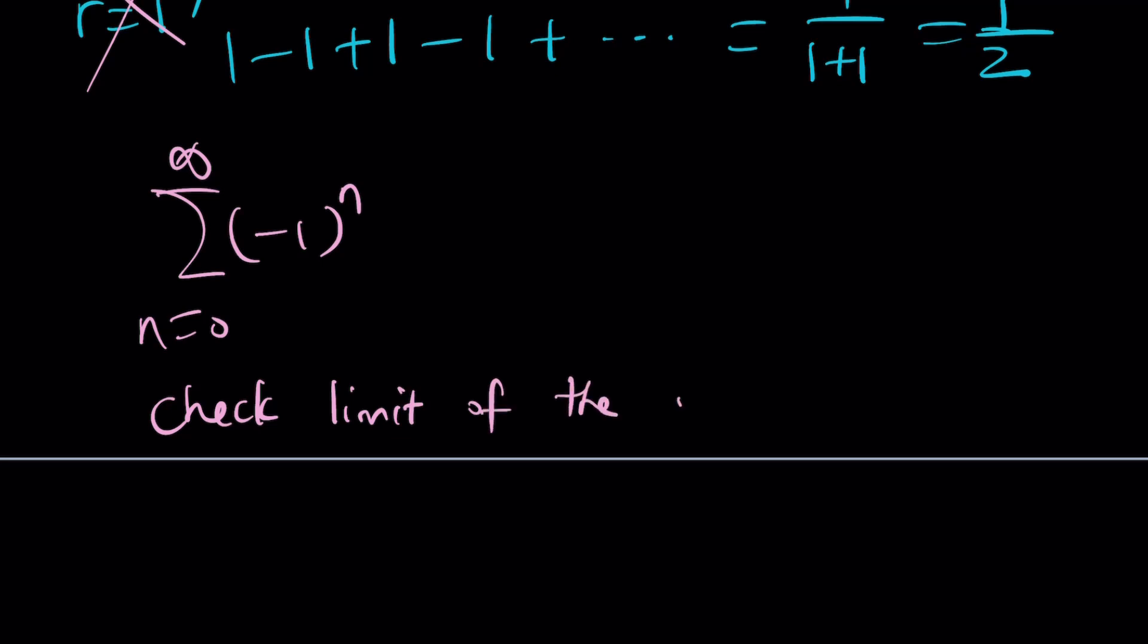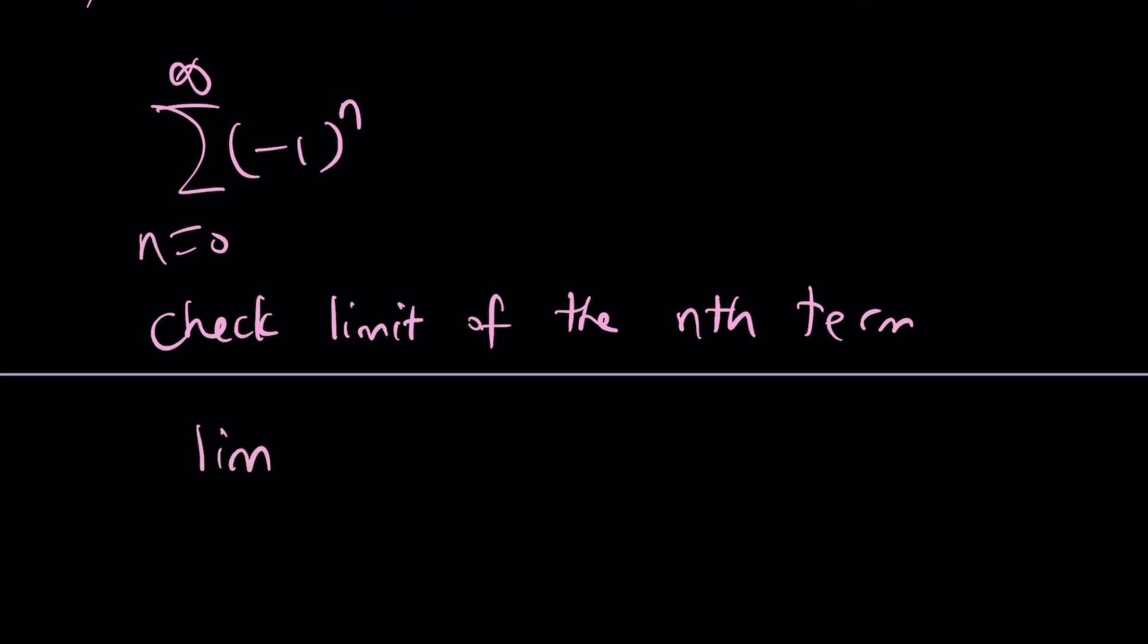Here's what we're going to do. We're going to check the limit of the nth term. I'm not talking about the partial sum, just the nth term. What happens if you check the limit of the nth term? If the limit of the nth term is 0, we don't know what is going on, but if it's not 0, the series definitely diverges. So check the limit as n approaches infinity of negative 1 to the power n.